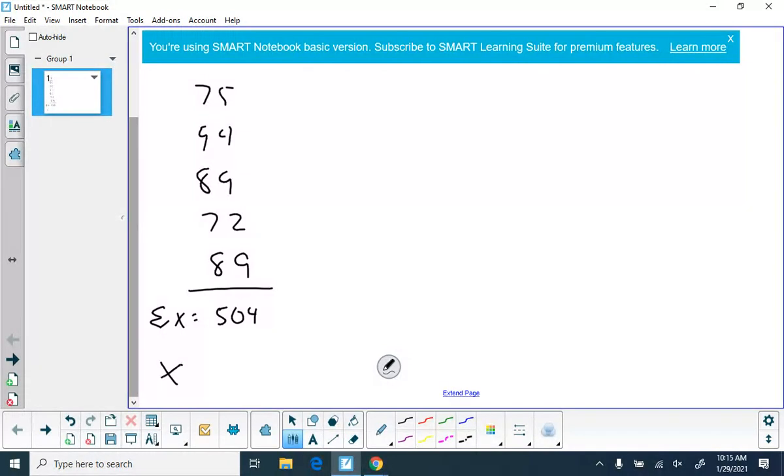Now to calculate our mean, we take our 504 and divide by 5. What did you come up with? 84.